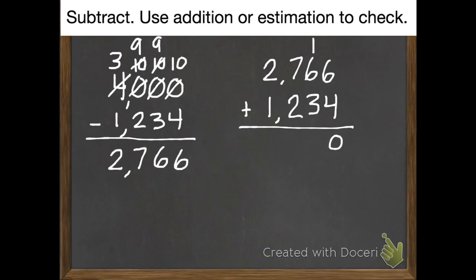And then my sums will be the same as my minuend. So 6 plus 4 is 10. 1 plus 6 plus 3 is 10. 1 plus 7 plus 2 is 10. And 1 plus 2 plus 1 equals 4, which was my minuend. So I know this is right.